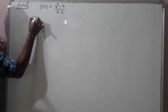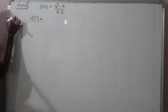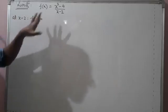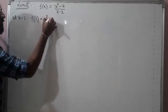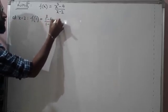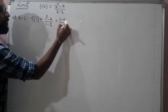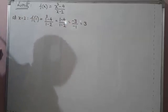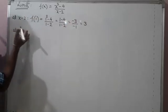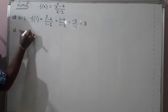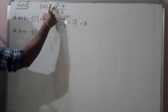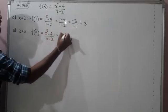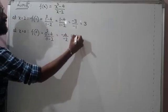If I ask you the value of this function at x = 1, you simply replace x with 1: (1² - 4) / (1 - 2) = (1 - 4) / (1 - 2) = (-3) / (-1) = 3. Similarly, at x = 0, f(0) = (0² - 4) / (0 - 2) = (-4) / (-2) = 2. So for most values there is no issue.